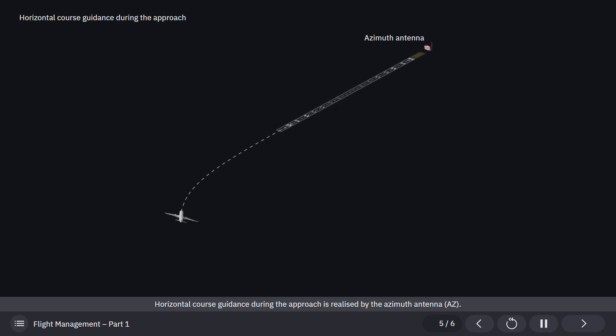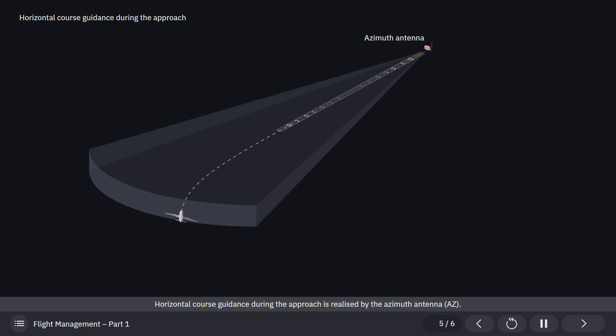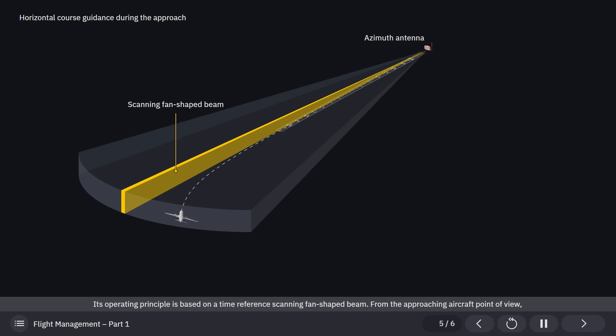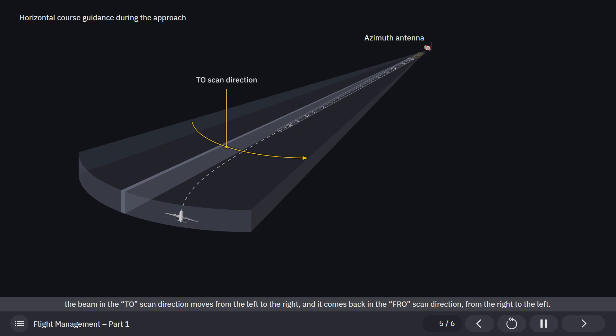Horizontal course guidance during the approach is realized by the azimuth antenna. Its operating principle is based on a time reference scanning fan-shaped beam. From the approaching aircraft point of view, the beam in the TO scan direction moves from the left to the right, and it comes back in the FRO scan direction from the right to the left.